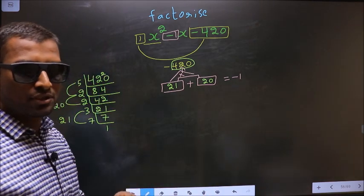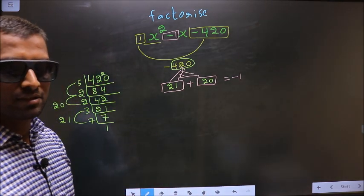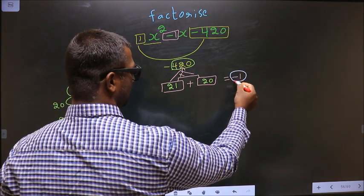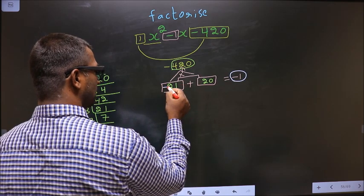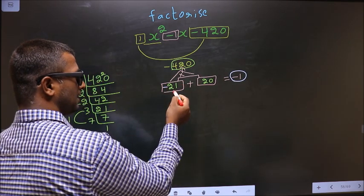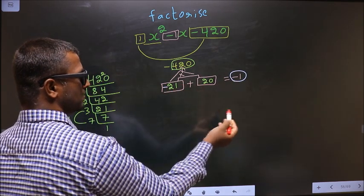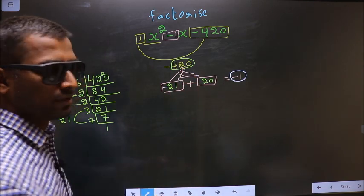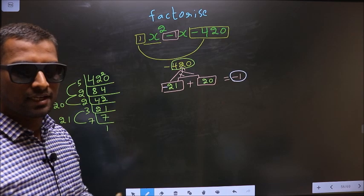Now you should adjust the signs. What I mean is here you should get -1. To get -1 you should put negative before 21. -21 + 20 is -1. -21 × 20 is -420. So now the signs are adjusted.